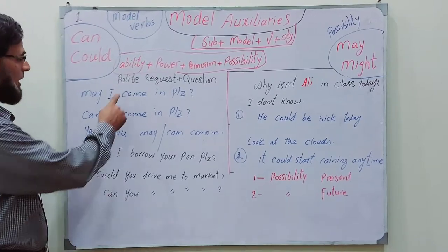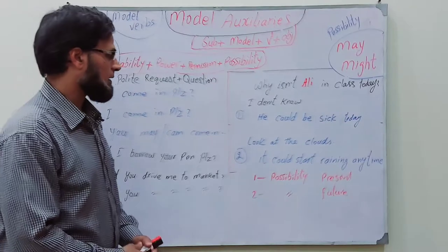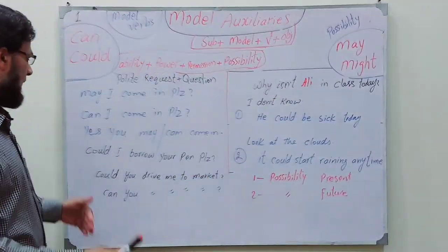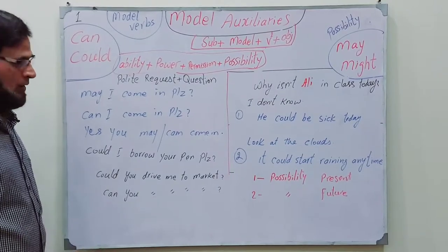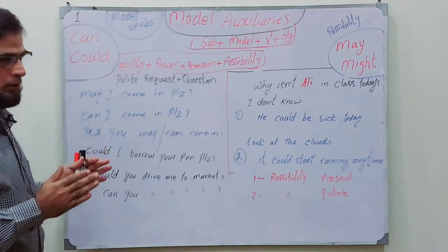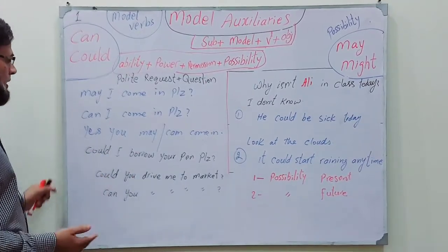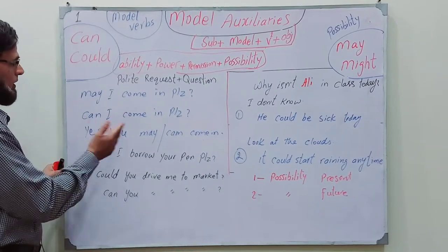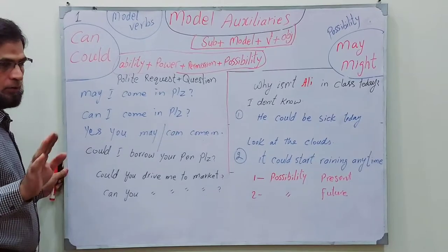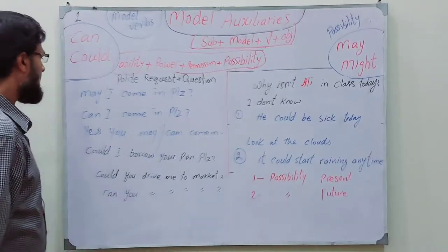Let us learn again about polite requests and polite questions, and also how can and could are used for possibility. For polite requests: 'May I come in please?' — when 'please' is added, it goes at the end of the sentence. 'May I come in please' or 'Can I come in please' — there is no real difference between them.